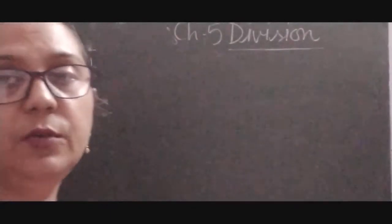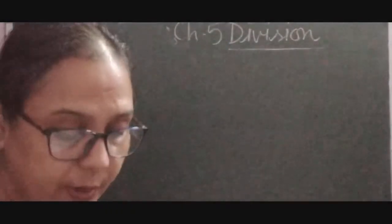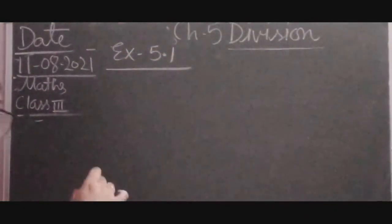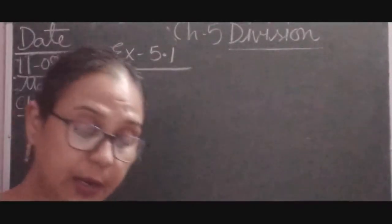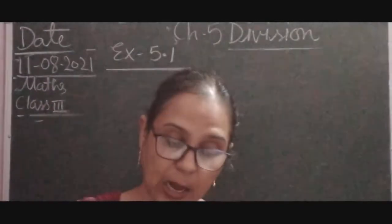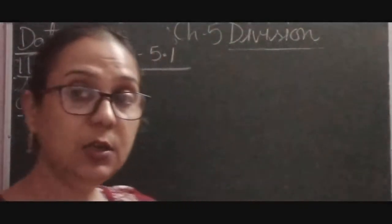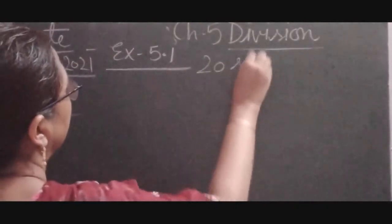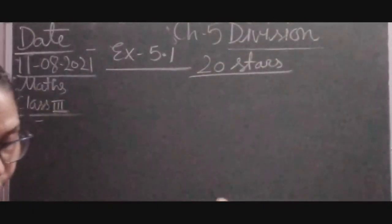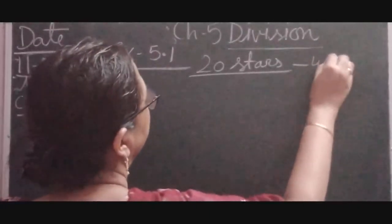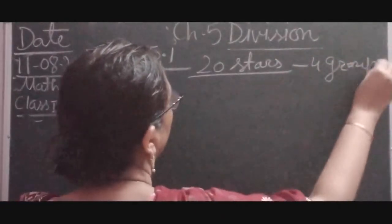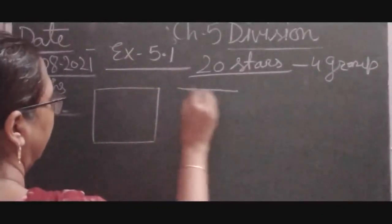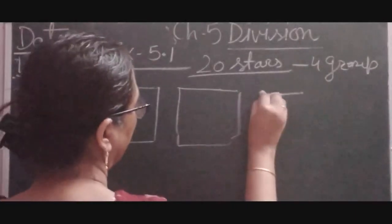Now we start Exercise 5.1. Question 1: Divide 20 stars into 4 groups — how many stars are in each group? We have 20 stars and need to divide them into 4 equal groups.